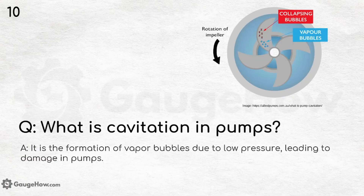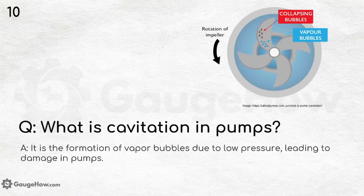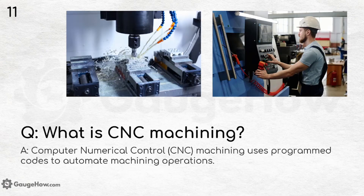What is cavitation in pumps? It is the formation of vapor bubbles due to low pressure, leading to damage in pumps. The bubbles collapse and the vapor pressure increases, impacting the pump impeller. What is CNC machining? CNC — Computer Numerical Control — machining uses programmed codes to automate machining operations.